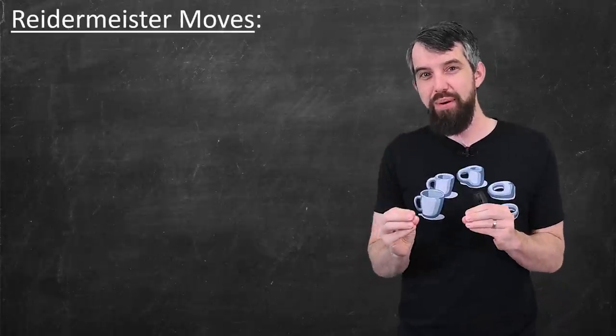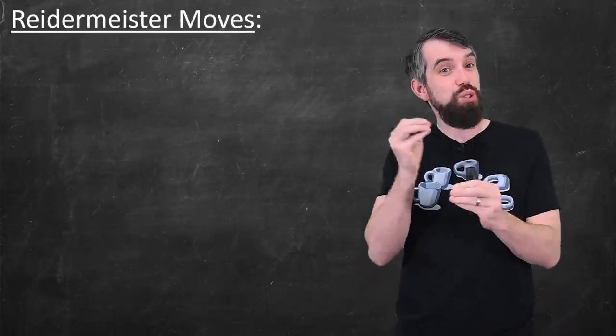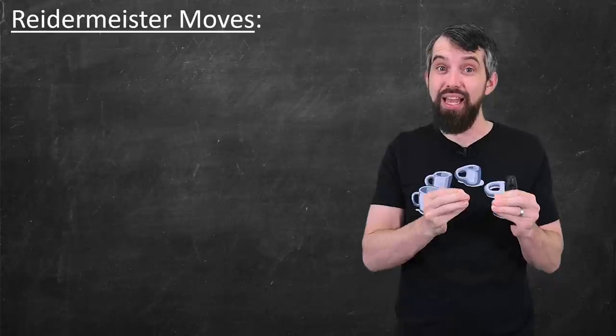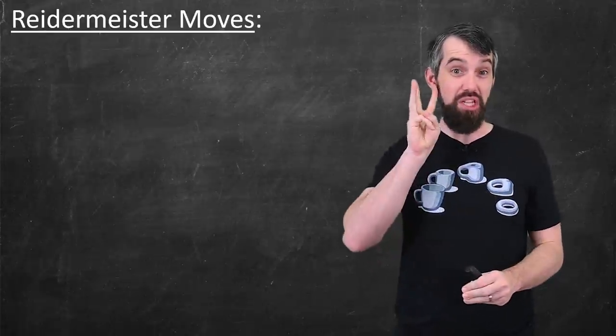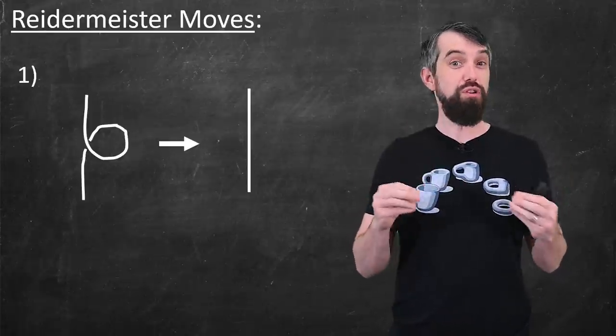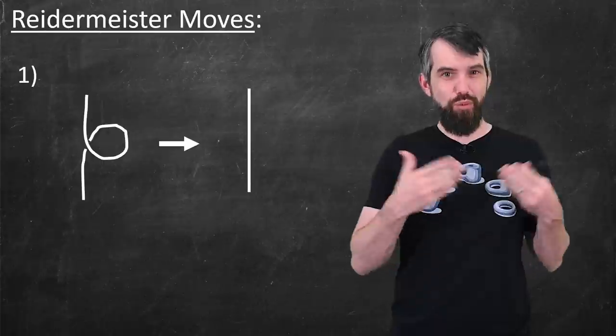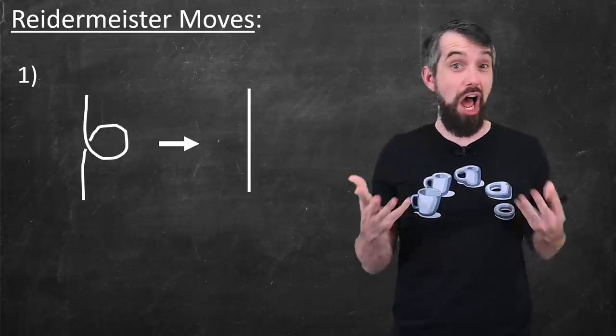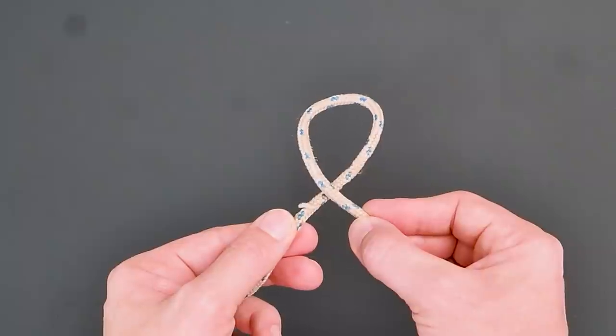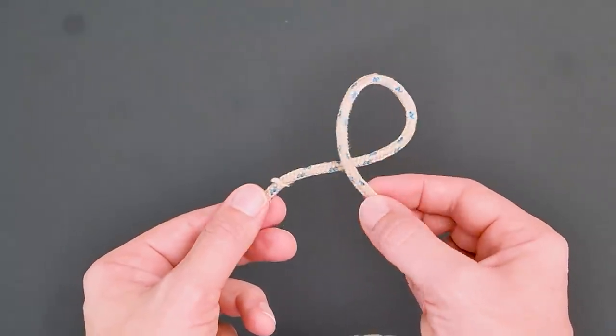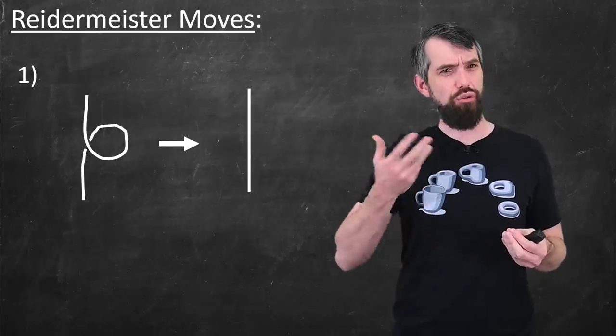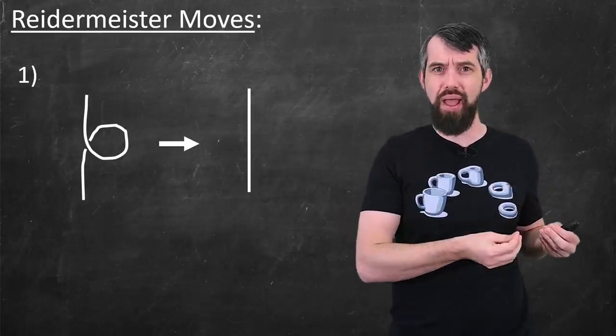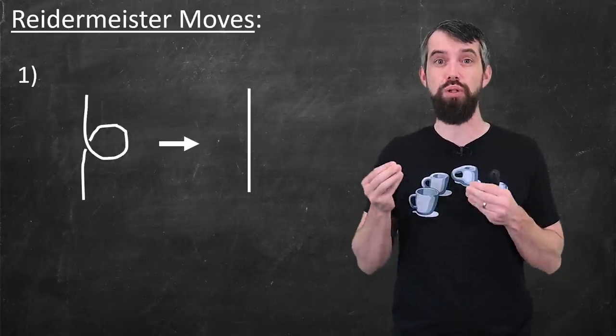And the idea of a Reidemeister move is it's a very precise way that I can manipulate a knot diagram. And there's basically three different moves. The first Reidemeister move is that if somewhere in my knot diagram I have just an isolated twist, I can untwist it. Makes sense. This is a perfectly logical move that I can do. I've sort of eliminated a crossing from the knot diagram, but I clearly haven't changed the actual knot.